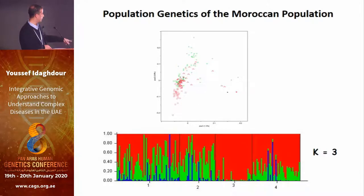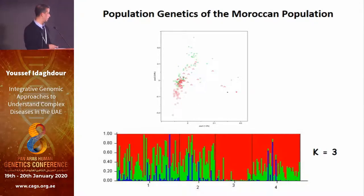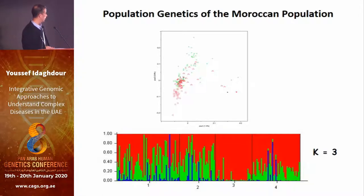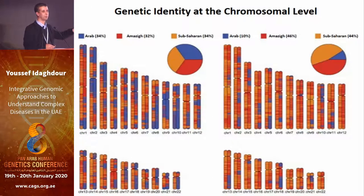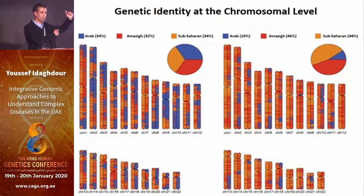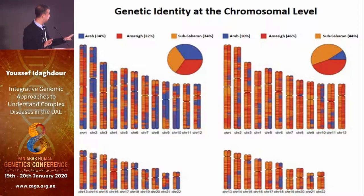We did structure analysis, and as you can see, looking at different villages, some villages are more Amazigh than others. Some are more admixed with the three components: sub-Saharan, Arab, and Amazigh. If you look at individual genomes, it's even more complicated. Using a method called chromosome painting, you walk along and assign haplotypes to each of the ethnicities. It's a mosaic picture of genetic diversity with different contributions from the three populations.